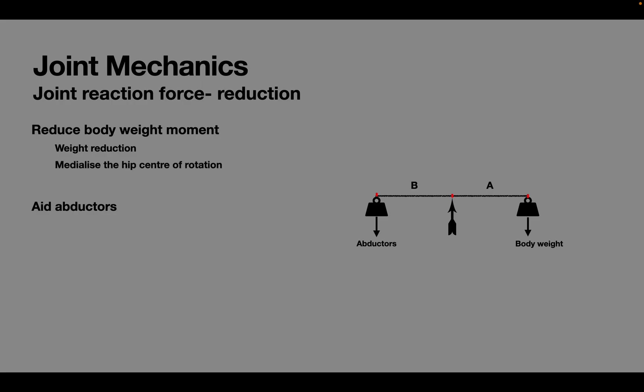Note that this has a dual effect of improving the abductor lever arm by increasing the hip offset. Trochanteric transfer during hip surgeries also produce a similar effect.